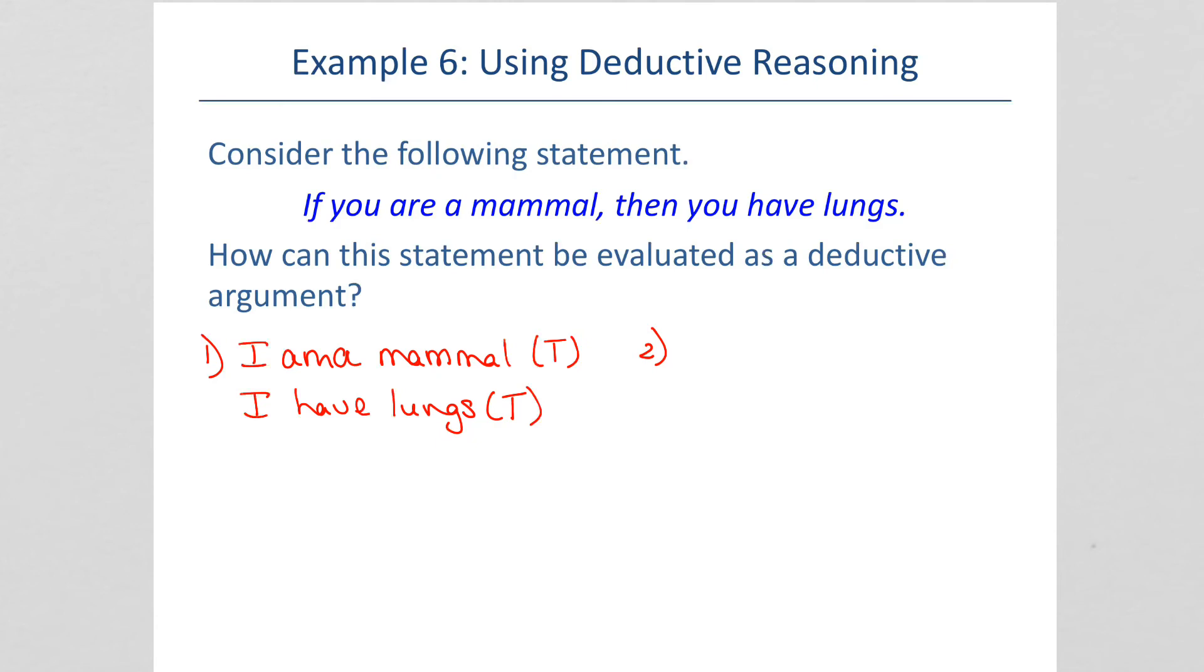And then you would say, I have lungs. And this is true. The second statement would be, I am a mammal, again, because the if part we keep. And I do not have lungs. And we would know that to be false. So you can, in fact, say that this conclusion is, since this conclusion is false, it doesn't seem to follow logical thought.